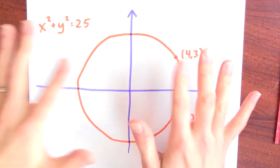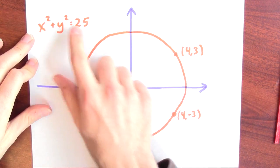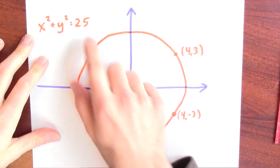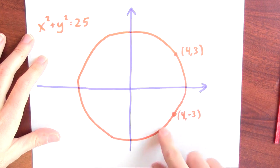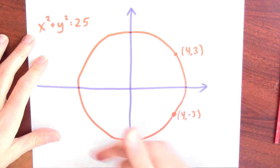Sometimes you don't have a function, you have a relation between two variables. A classic example is x squared plus y squared equals 25. The graph of the points in the plane that satisfy this equation is a circle.